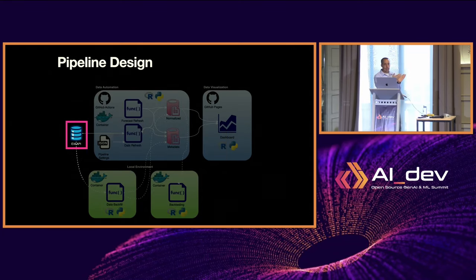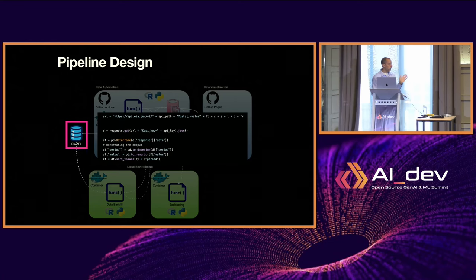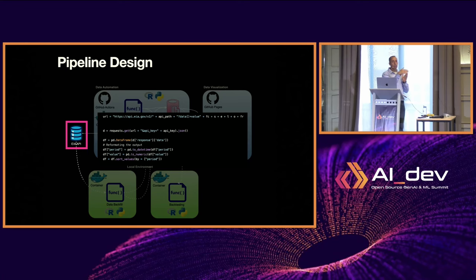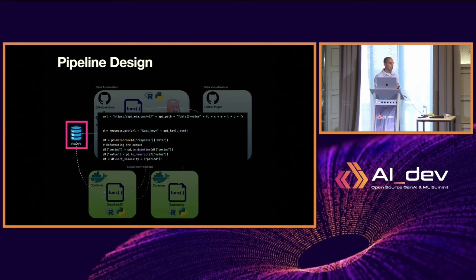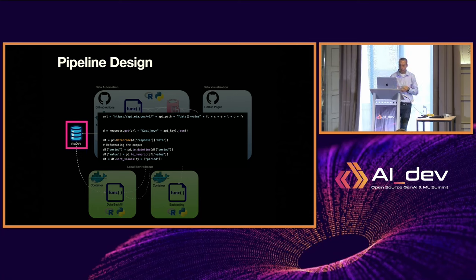The data source is the EIA API. Here's how simple it is: you set the URL with the API endpoint and the query, send a GET request using the requests library, get back a JSON file, and convert it to a Pandas DataFrame. It's straightforward.